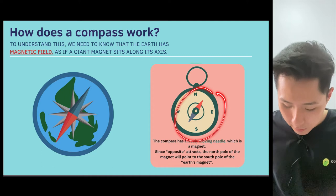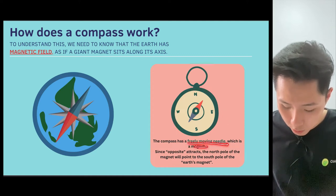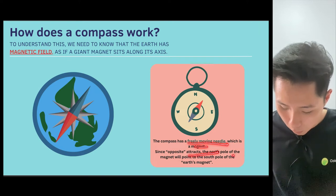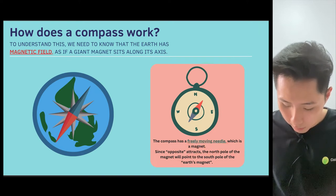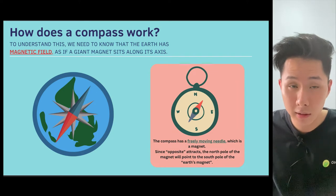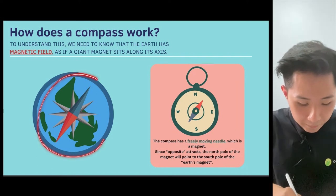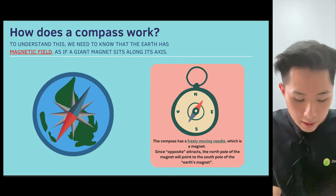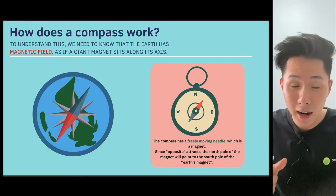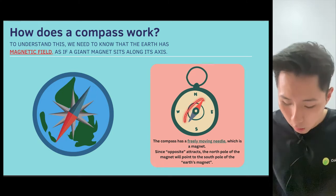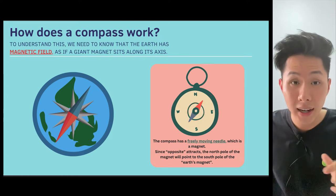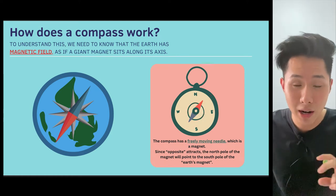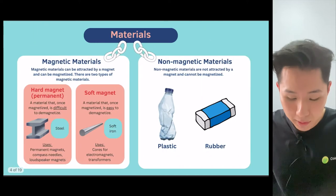If you look at the compass here, they are basically made of a freely moving needle, which is a magnet. Because of opposite poles attracting, the north pole of the magnet will point to the south pole of the Earth's magnet. What this means is that if you look at the Earth, there is an internal magnet located at the core of the Earth, which causes the needle to react in that way.